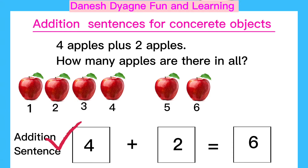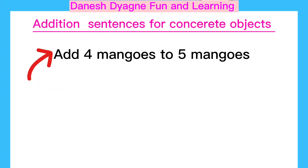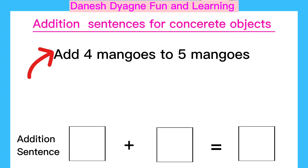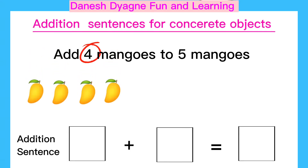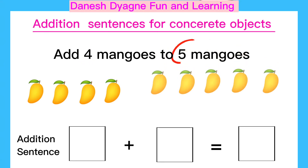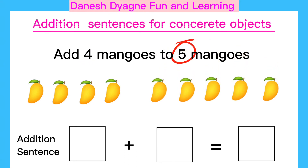Let's move to another example. Add four mangoes to five mangoes. We have four mangoes and five mangoes here. We have to write here four, and here is five.